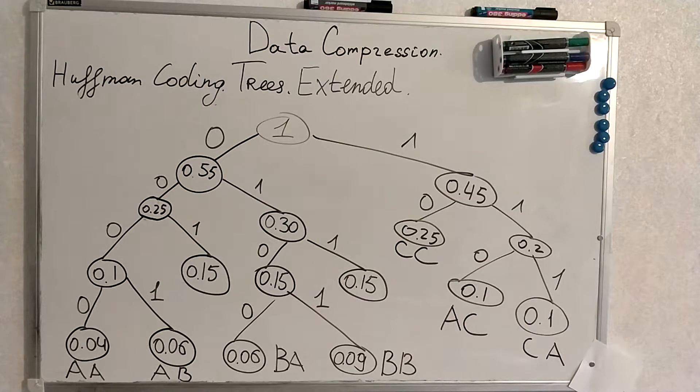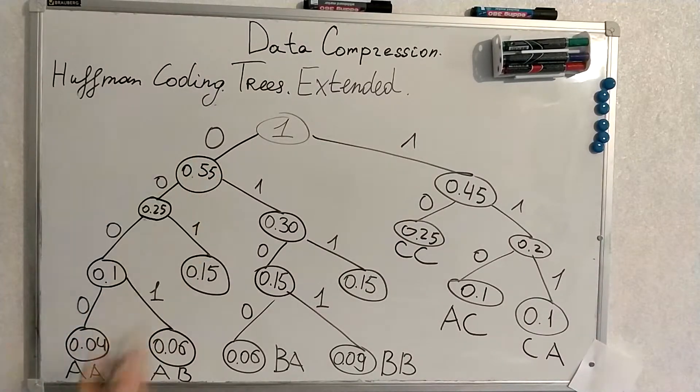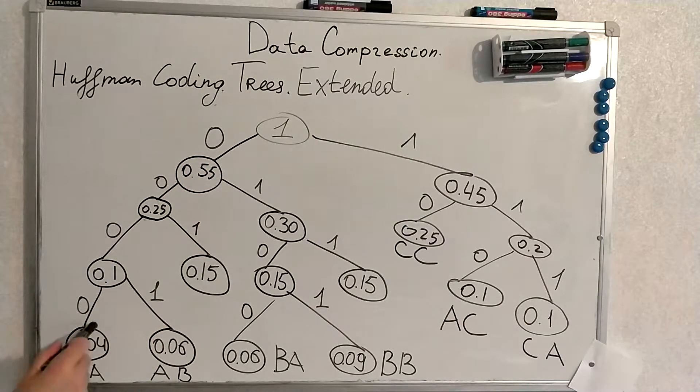One useful remark. This type of node is called just a node, and this type of node in the tree is called a leaf.